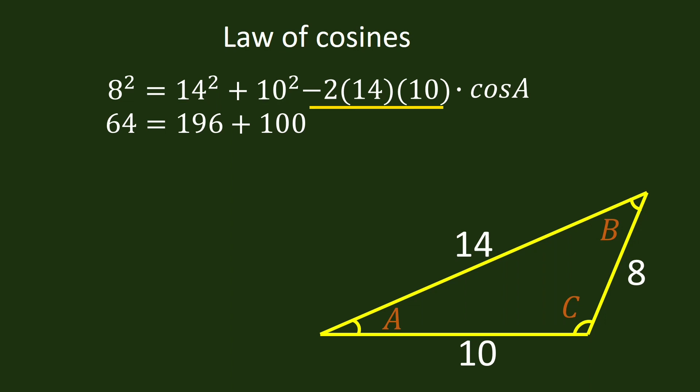Negative 2 times 14 times 10 is negative 280 times cosine A. Bring down 64. 196 plus 100 is 296. Bring down negative 280 and cosine A.